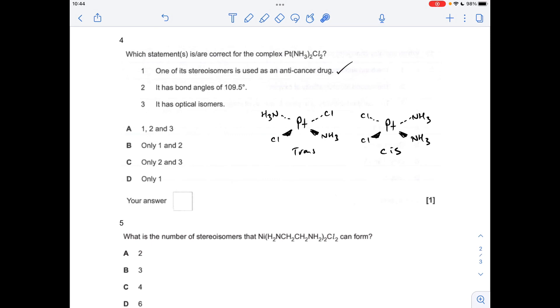So like I said a minute ago, 90 degree angle, so all of these angles are 90 degrees, so statement two is incorrect. Does it have optical isomers? Is the mirror image of that non-superimposable on that? The answer to that is no, they are completely superimposable, so only statement one is correct, which makes the answer D.